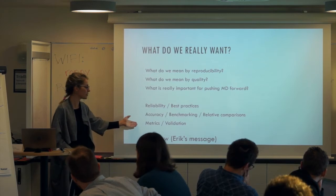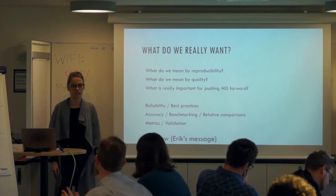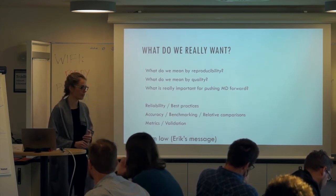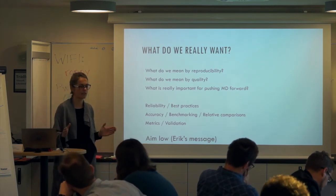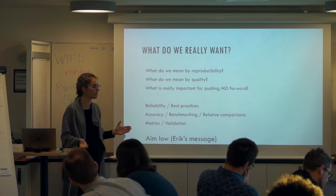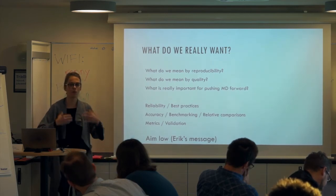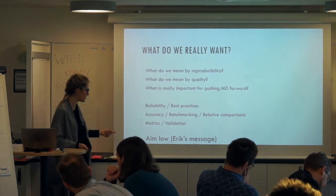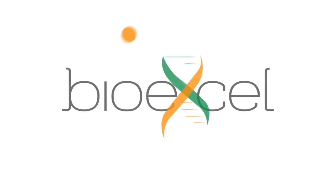Which metrics do we want to use and how do we validate what is actually useful? The nicest thing I've seen recently is the Living Journal of Computational Molecular Science and their best practices for error bars and error calculations. I think we really need to start consolidating things we've learned in the past ten years and make it more accessible to people coming in, so they don't have to spend months learning how to calculate error bars. And Eric's message from breakfast: aim low, don't aim too high — let's get at least something done.